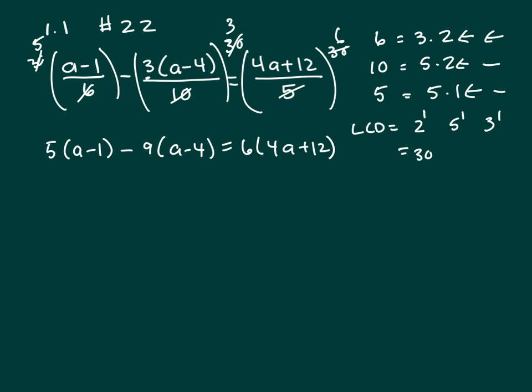So I get rid of my fractions. Then the next step, I will get rid of my parentheses. So this is 5a minus 5 minus 9a plus 36 equals 24a plus 72.